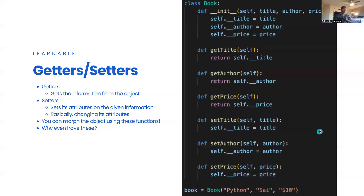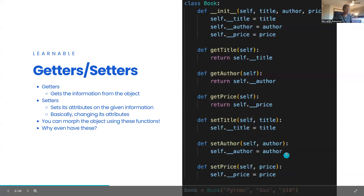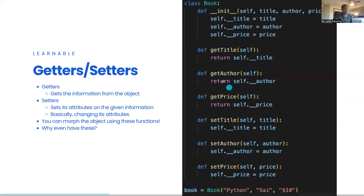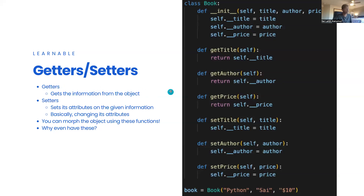Now, getters and setters. You've already written functions, so this should not seem unorthodox. The constructor defines the object — very important, always required. Getters get the information from the object — they allow others to look at the information. For example, `define get_title` returns `self.__title`.